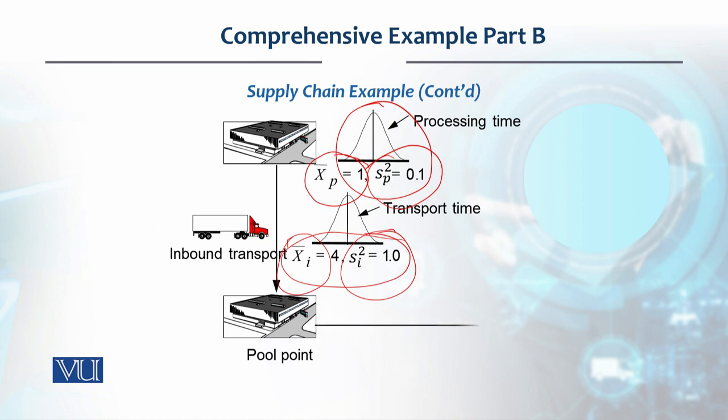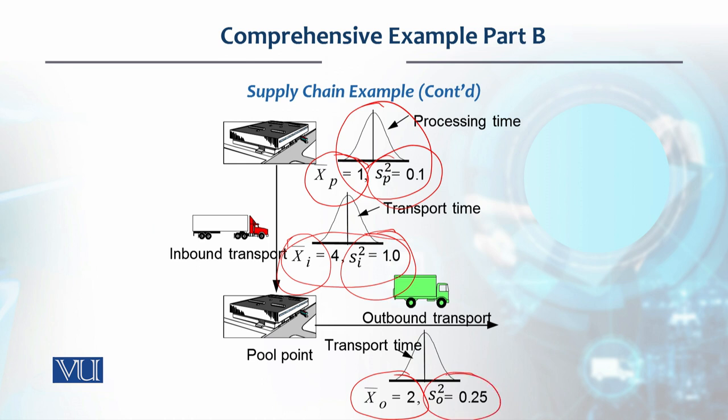After this, material is combined at the pool and then transported to the distributor's place. This outbound transportation data is also variable—average is 2 and variance is 0.25. So we have these figures, and then it reaches the distributor's place.